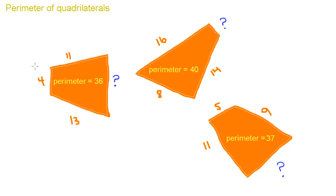So right here we have a perimeter of 36. The perimeter is given. So we have 4, 11, and 13. All we have to do is add those sides together.